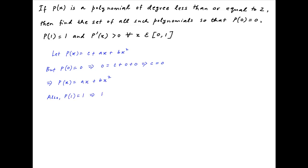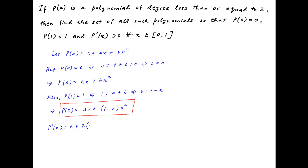We are also given that the value of p(x) at x equals 1 is equal to 1. Therefore a plus b equals 1, which implies that b is equal to 1 minus a. Therefore the set of all polynomials meeting these conditions can be written as ax plus (1 minus a) times x squared.